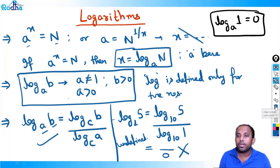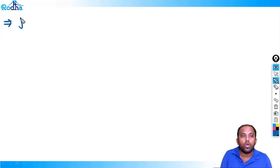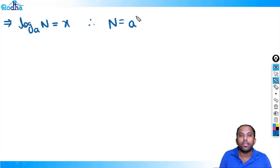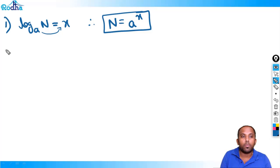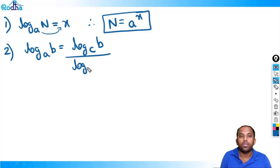So two important properties so far: first, by the definition of log, if log_a(n) equals x, then we can always write n equals a raised to x — a comes here and x goes to the power. Second, the base change formula: log_a(b) equals log_c(b) upon log_c(a), allowing us to change the base as per convenience.